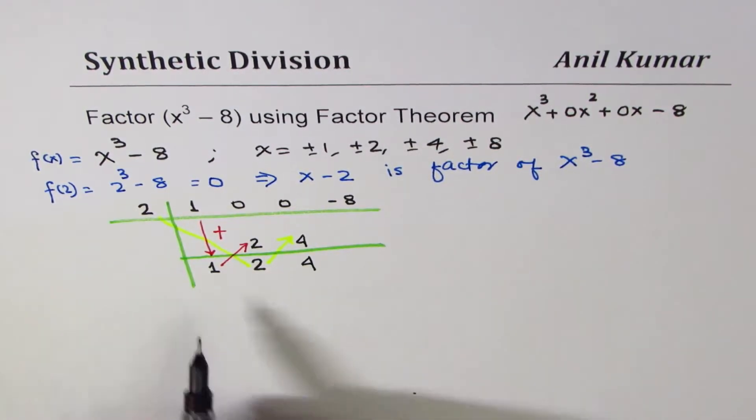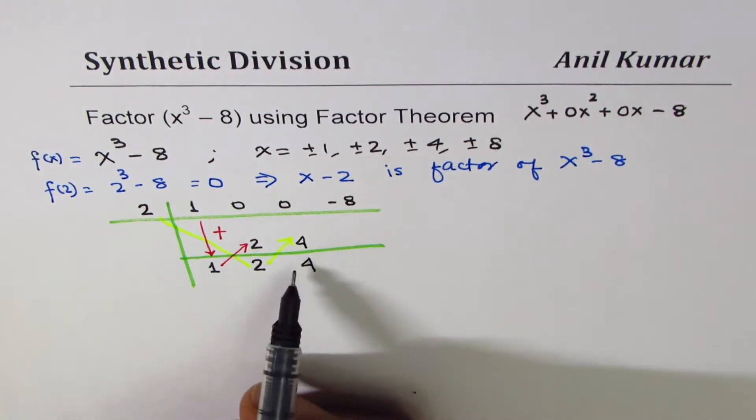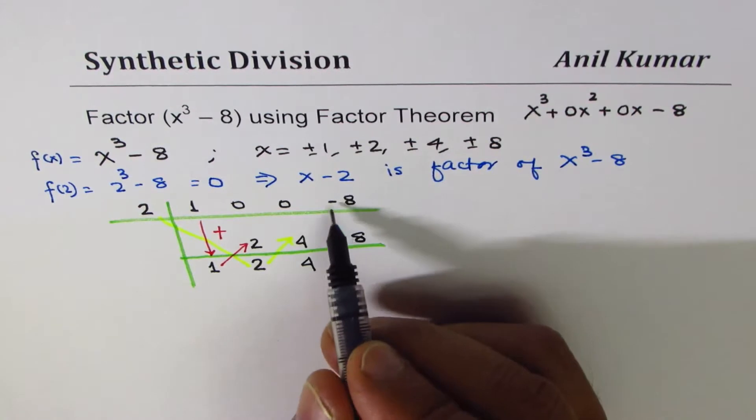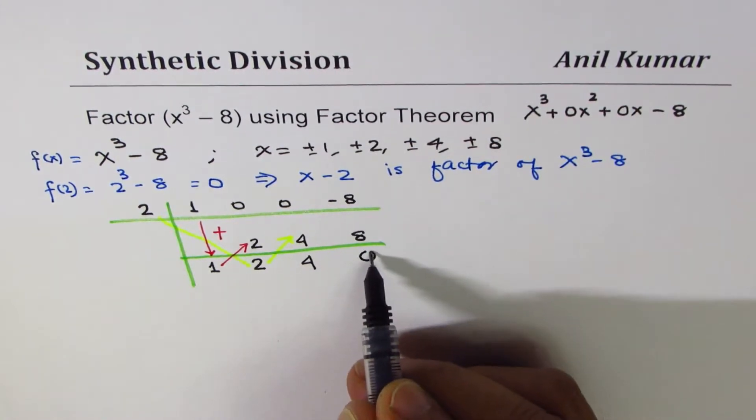And then, we'll times 2 by 4, and write it under minus 8. 2 times 4 is 8. Minus 8 plus 8 is 0. So as expected, this is the remainder.